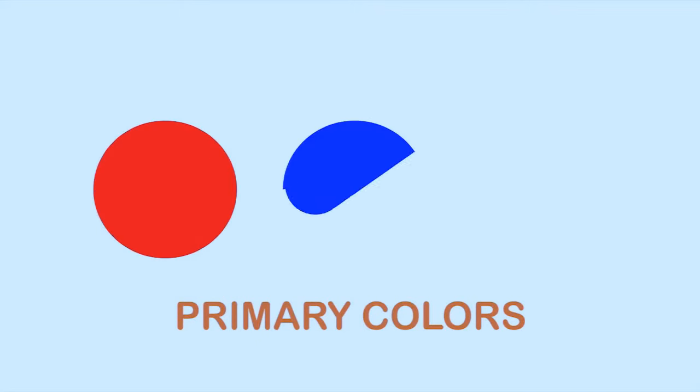The building blocks of colors are the primary colors. If you have the primary colors, you can mix any other color. The primary colors are red, blue, and yellow.